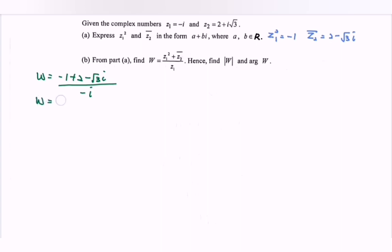So what we have to do is to simplify the situation. w equals 1 minus square root of 3 i over negative i. So multiply by the conjugate, so here we have i over i. So continue, we have i minus the square root of 3 i squared, so it becomes positive square root of 3.